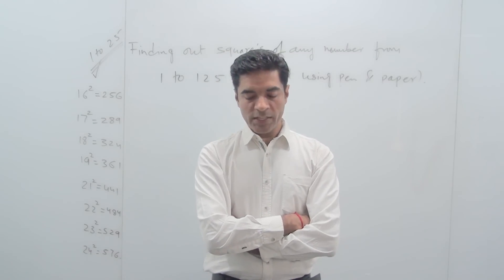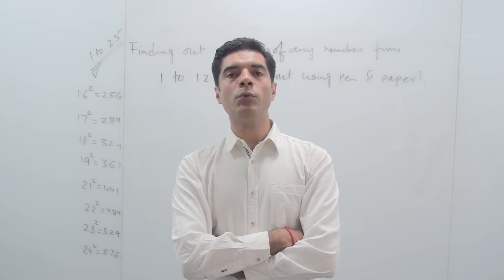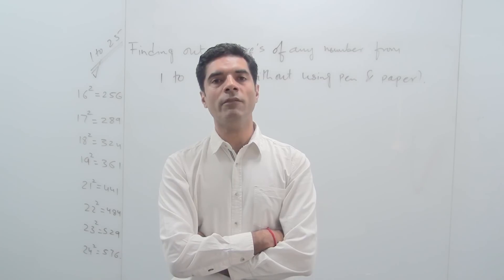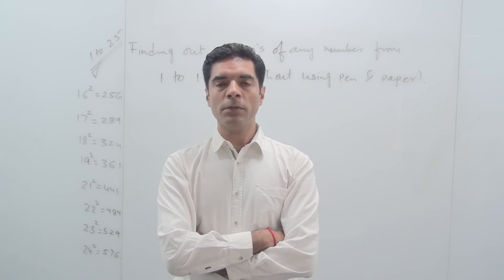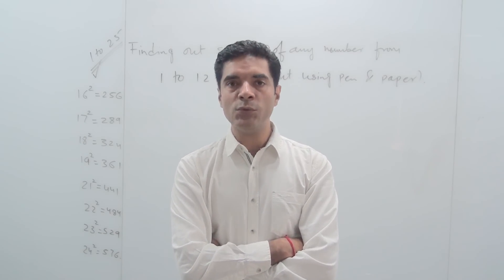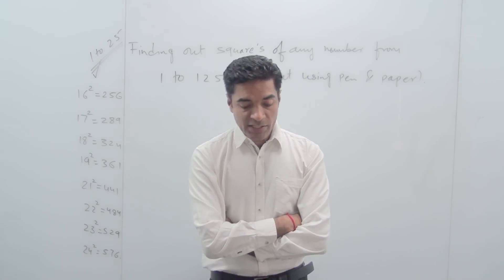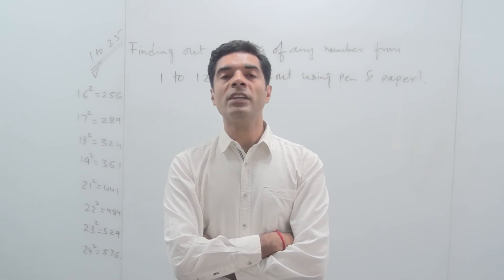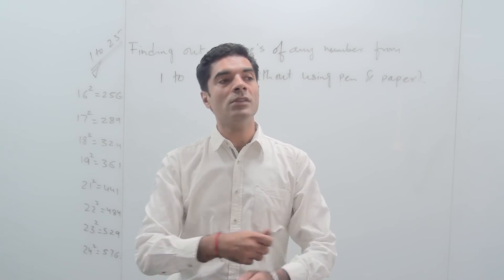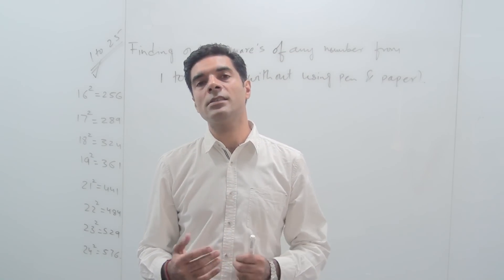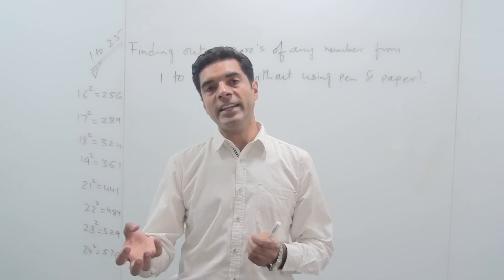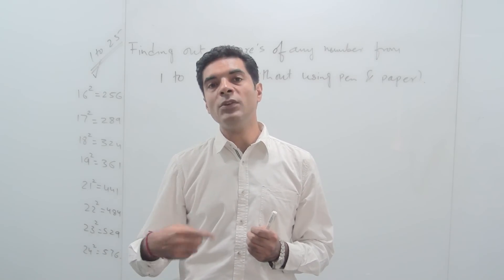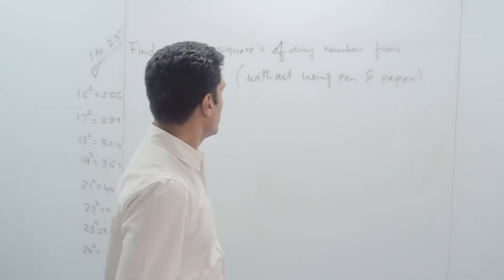Hello friends. In today's session I will help you in finding out the square of any number from 1 to 125 without using pen and paper, or with very less use of pen and paper. The application is going to be there in solving questions on quantitative aptitude, because at times you notice that if you know these calculations mentally, probably you will save a lot of time. So let's begin.